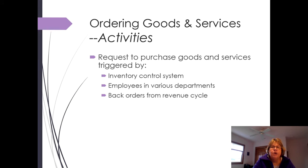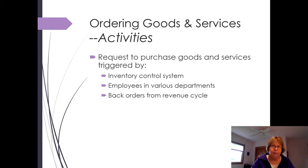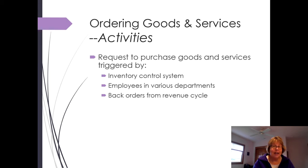The first thing we do is order the goods, and we usually start with a purchase requisition. This purchase request is triggered by a couple of things: the inventory control system — for example, if we're down to 30 pieces and that's our reorder point, it triggers the process to reorder more parts for our manufacturing cycle. Various employees can put in a requisition — for instance, requesting a new whiteboard or TV for an office, describing the size, brand, and which department to charge it to. Back orders from the revenue cycle or a manufacturing request would also trigger a purchase.